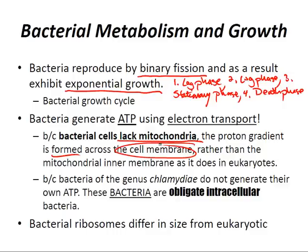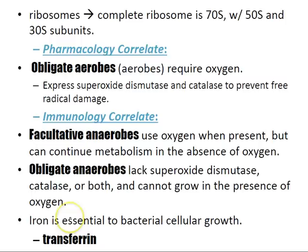Bacterial ribosomes differ in size from eukaryotic ribosomes. The complete bacterial ribosome is 70S, with a 50S and a 30S subunit. This gives a pharmacology correlate: the differences between bacterial and human ribosomes form the basis for the efficacy of many antibiotics. These drugs include aminoglycosides, tetracyclines, chloramphenicol, macrolides, clindamycin, linezolid, and streptogramins.